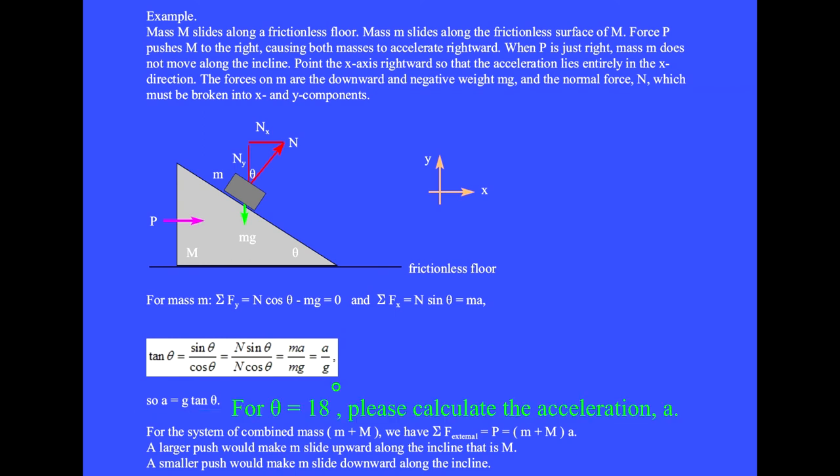If theta is 18 degrees, please calculate the acceleration a. For the system of combined mass little m plus big M, we have the sum of the external forces equals P equals (little m plus big M) times a.